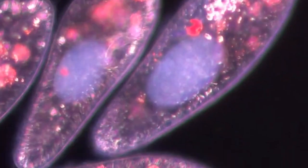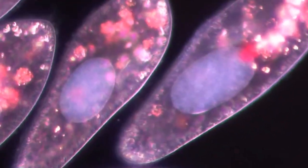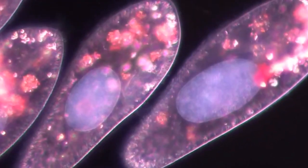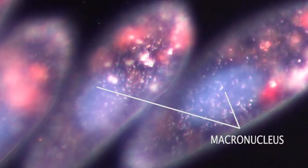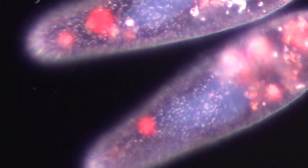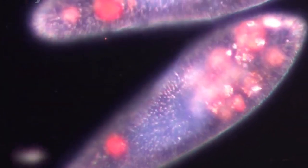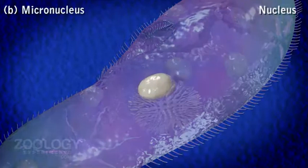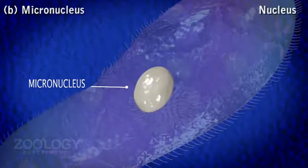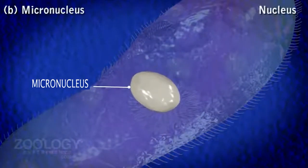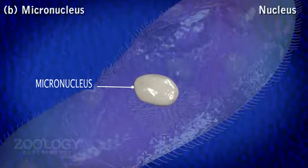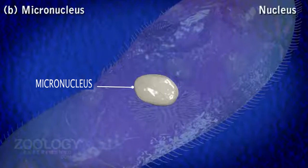Unlike regular eukaryotic cells, paramecium has two types of nuclei: micronucleus and macronucleus, which differ in their shape, content, and function. The micronucleus is diploid — it contains two copies of each paramecium chromosome. The micronucleus contains the genome, all of the DNA that is present in the organism. This DNA is passed from one generation to another during reproduction.